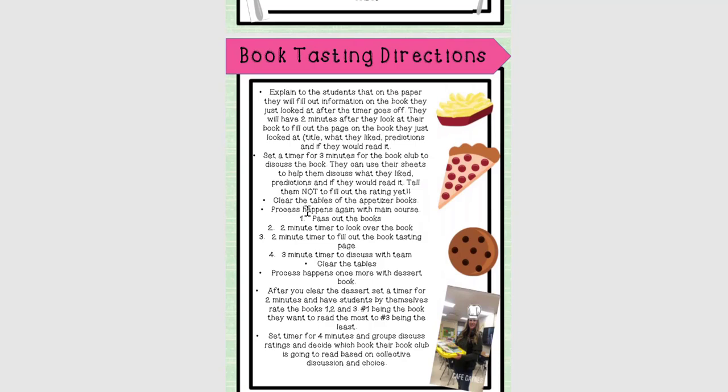Before moving on, set a timer for three minutes and the book club group talks about that book — based on their notes, did they like it, what are their predictions. They're not filling in the rating yet. Then do the same thing: pass out the main course books — the second book for each club — timer for two minutes to look it over, two minutes to fill out the book tasting page, three minutes to discuss, then clear the tables. Then give them their dessert book: two minutes to look at it, two minutes to write about it, three minutes to discuss. You can adjust those times based on your students.